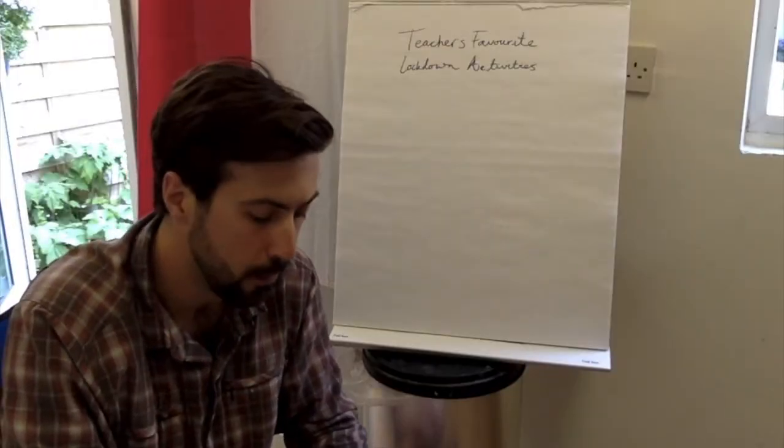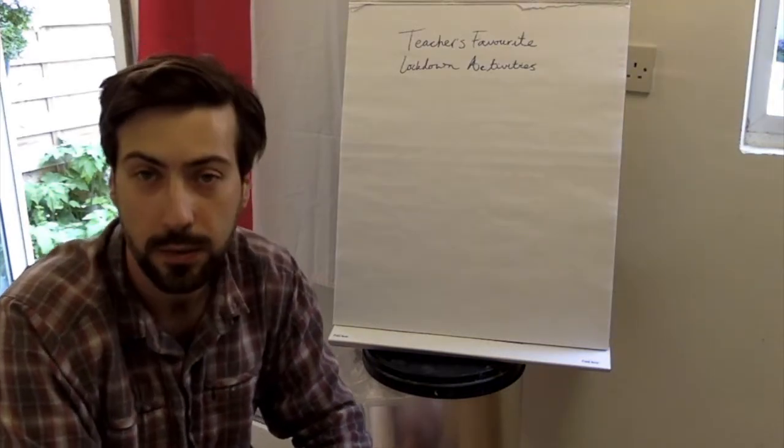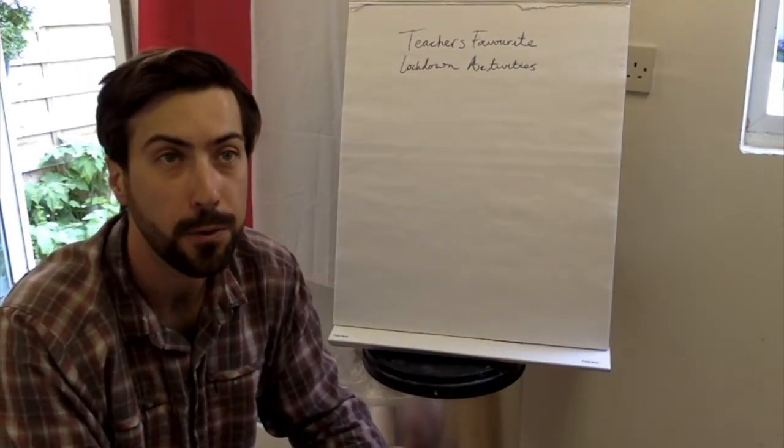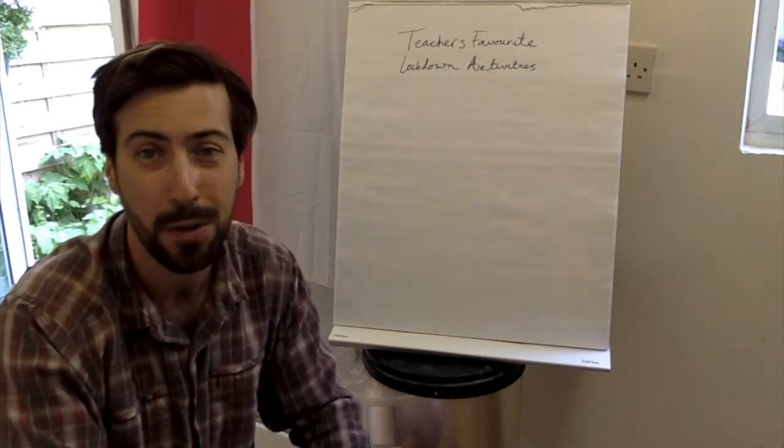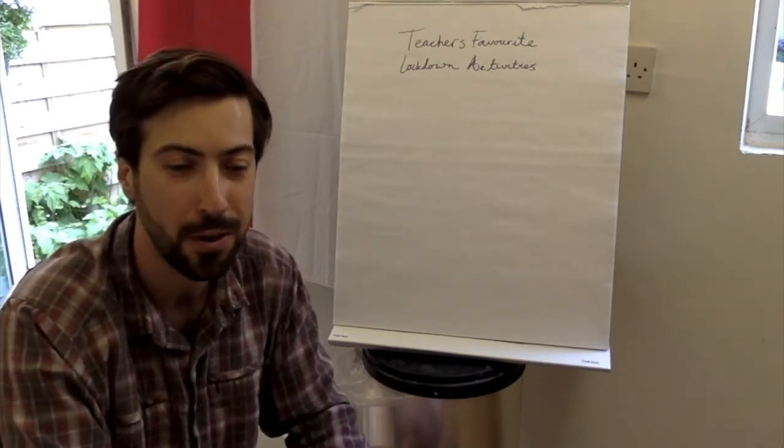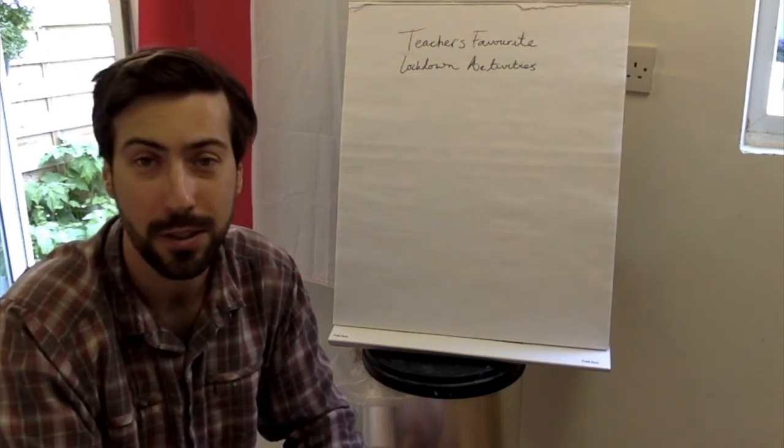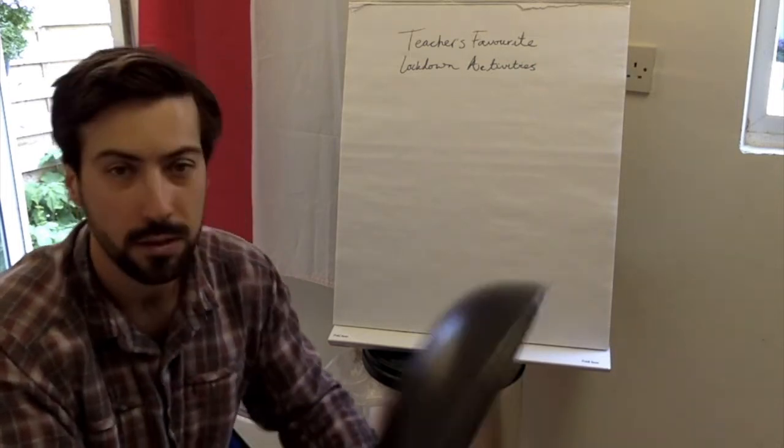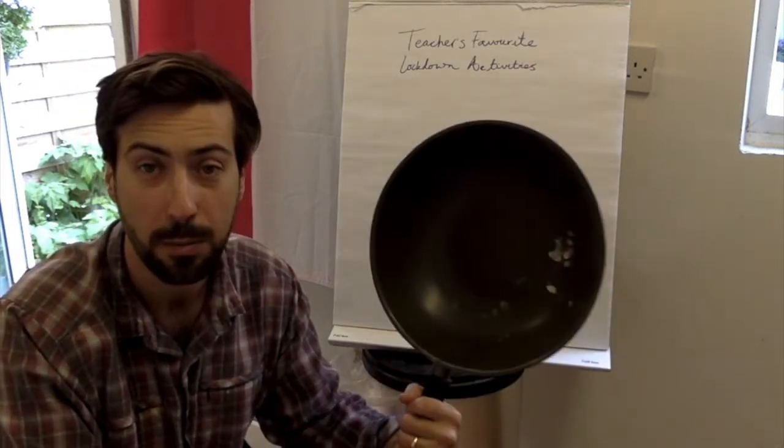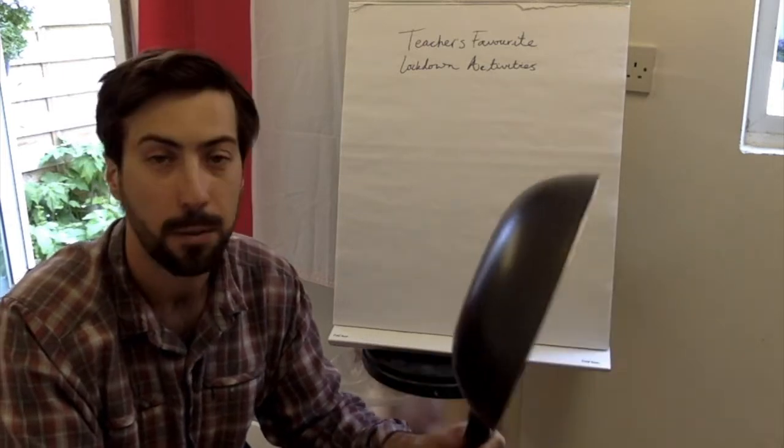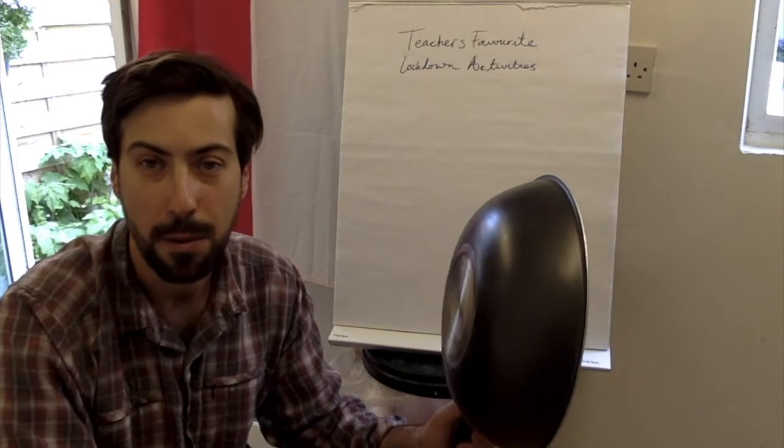Alright here we are on the learning shed. It says teachers' favorite lockdown activities. I need to draw my pie. We know what shape a pie is in right? It's in the shape of a circle. I'm not going to freehand it because I don't think it'll turn out very good. So I found this cooking pan right here. It's in the shape of a circle perfectly. I'm going to see if I can use it to make my pie here.